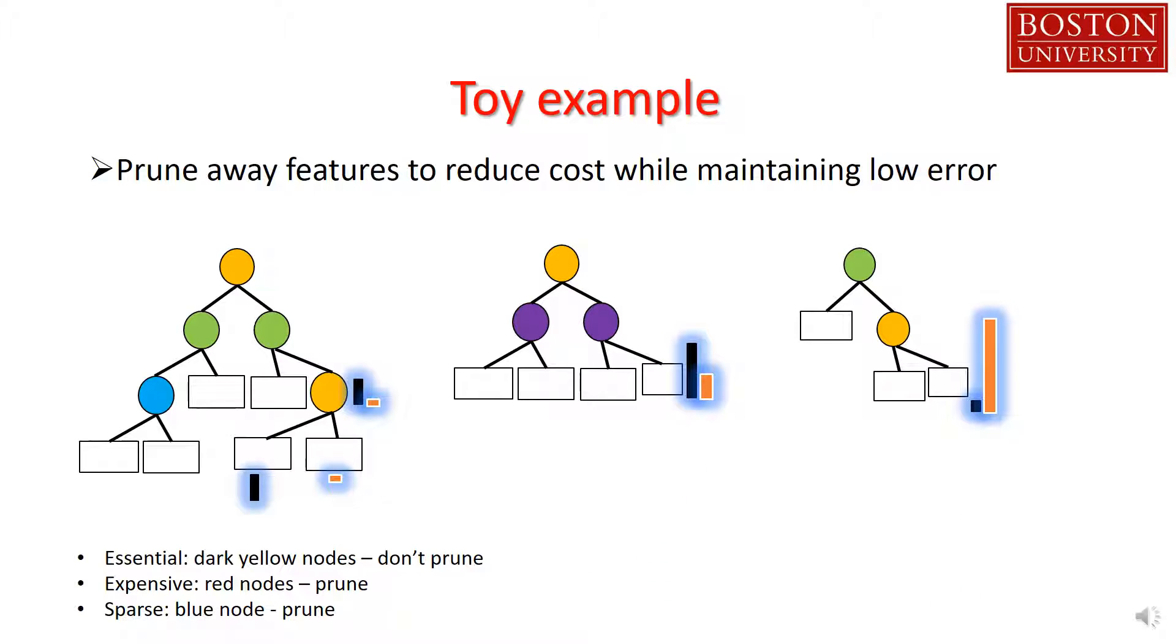We can also prune away the blue node as it appears only once and probably won't affect the majority vote. We don't want to prune this yellow node because the yellow feature is used anyway at the root, so pruning it won't help reduce the cost. These are just some of the many considerations we have for pruning the random forest.